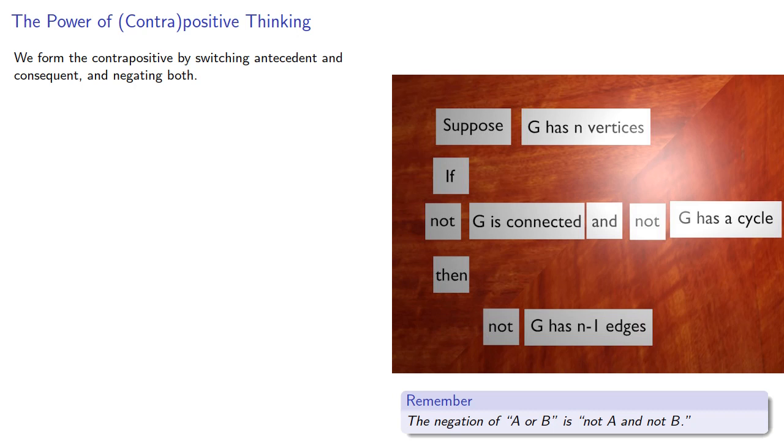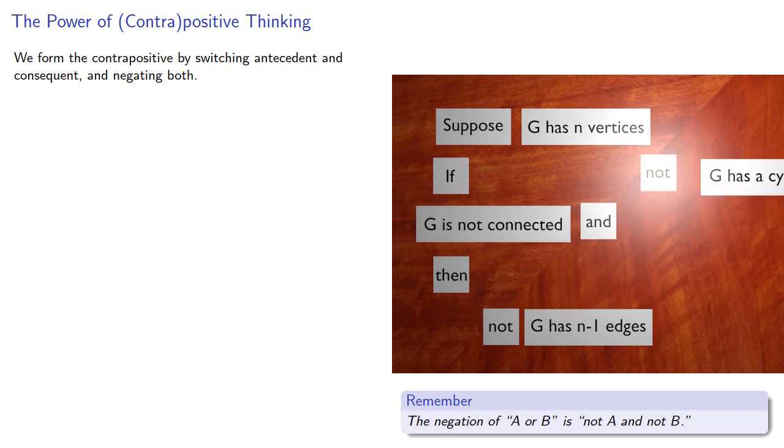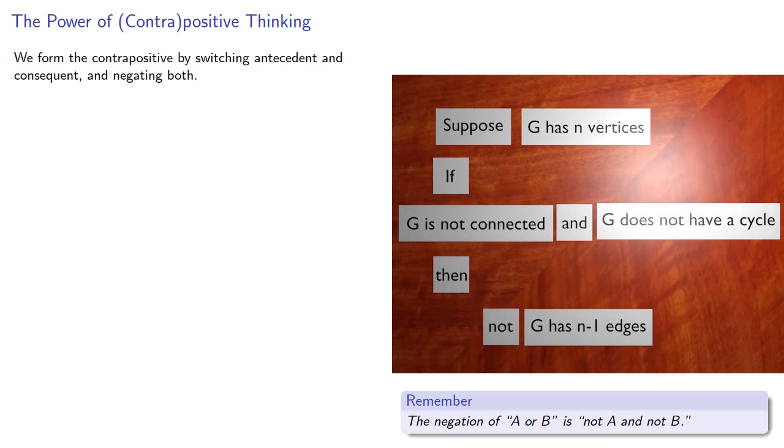Let's rewrite those so they read better. So the negation of G is connected is that G is not connected. The negation not G has a cycle is G does not have a cycle. And the negation not G has n-1 edges, G does not have n-1 edges. And so this gives us a theorem.